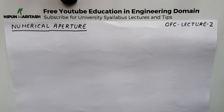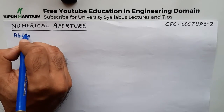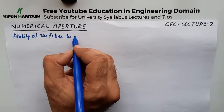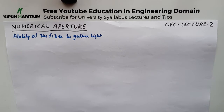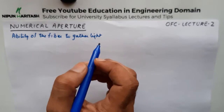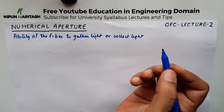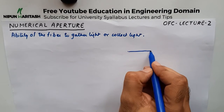Hello friends, welcome to another OFC lecture. In this tutorial we'll talk about numerical aperture. Numerical aperture is the ability of the fiber to gather light. This is similar to the aperture of a camera, where more light going into the camera results in a better picture. So numerical aperture is also the ability of the fiber to gather or collect light.